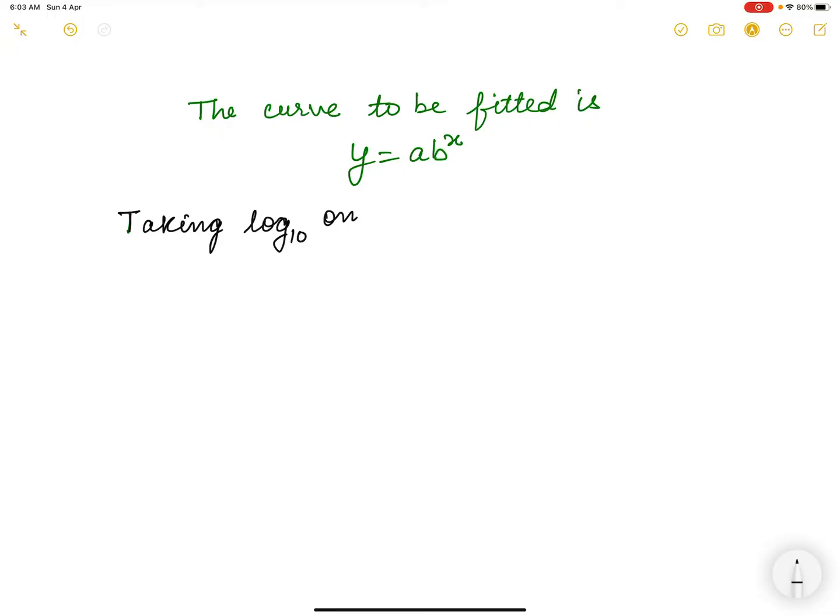Now the curve which is to be fitted is y equals ab to the power x. In order to solve this, we will reduce it to a straight line and we may use then the normal equations of the straight line. Take log on both the sides of this equation. So on taking log, we will take log to the base 10. If I do not write here to the base 10, it means that it is to the base 10.